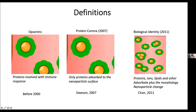This area of research has been active for the last 15 to 20 years, but it started long before we called proteins absorbed onto the surface the 'protein corona' or 'biological identity.' Before 2000—as early as the 1960s—it was known that when you inject nanomaterials into the body, serum proteins absorb onto the surface. At that time, these absorbed proteins were called opsonins, as they were implied to be involved in the immune response to nanomaterials. The protein corona term became much broader in describing all proteins that absorb onto the surface.